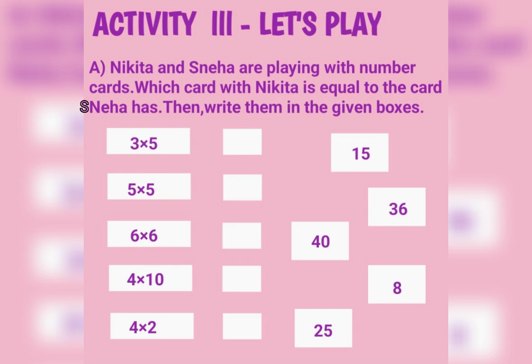Activity 3: Let's Play. Nikita and Sneha are playing with number cards. Which card that Nikita has is equal to the card Sneha has? Write them in the given boxes. Cards Nikita has: 3×5, 5×5, 6×6, 4×10, 4×2.